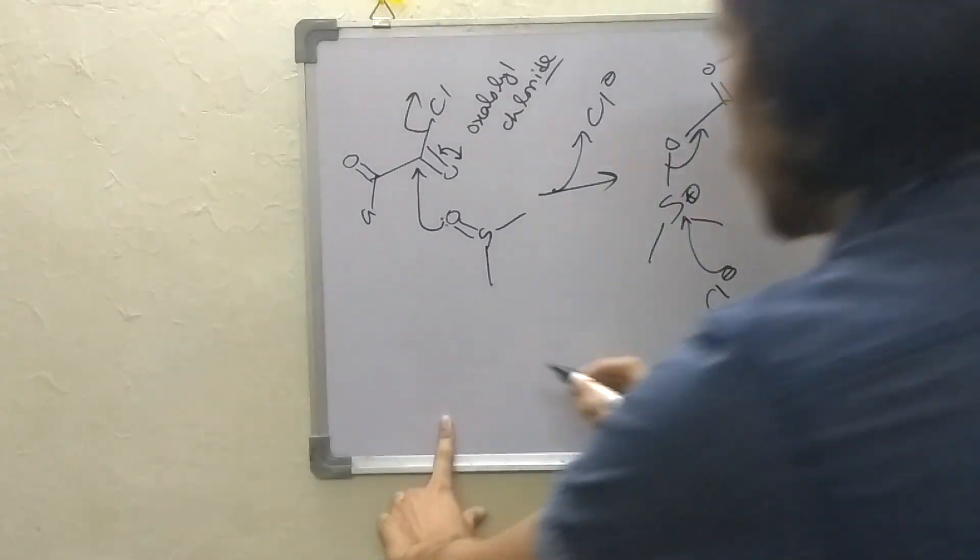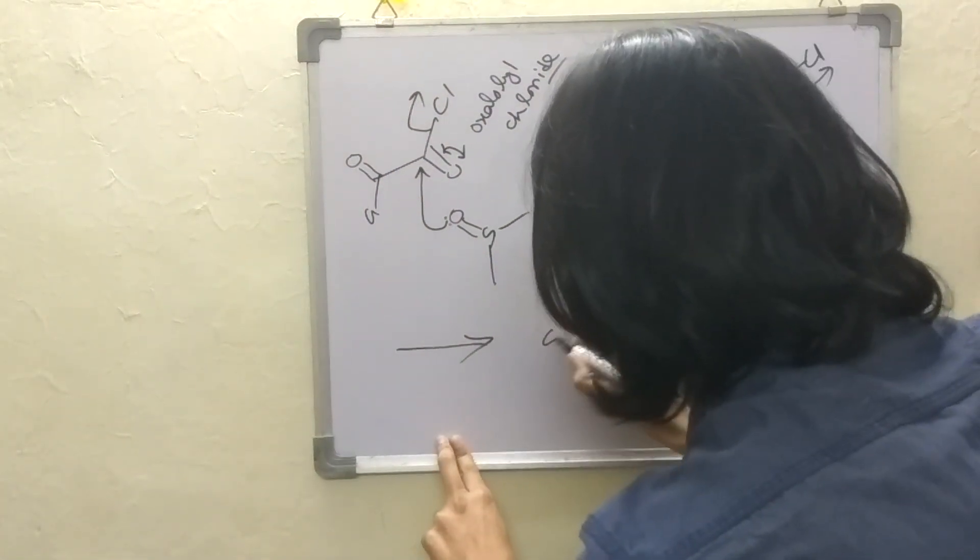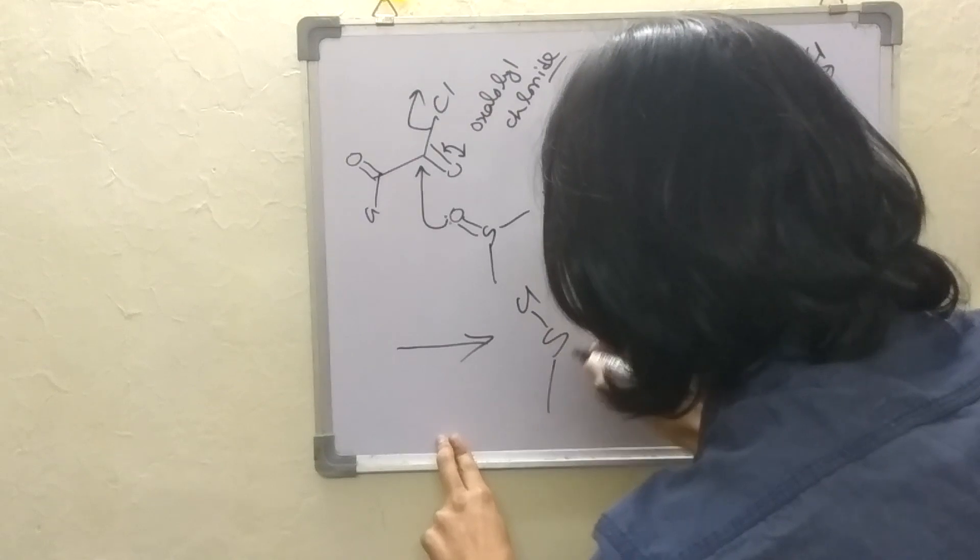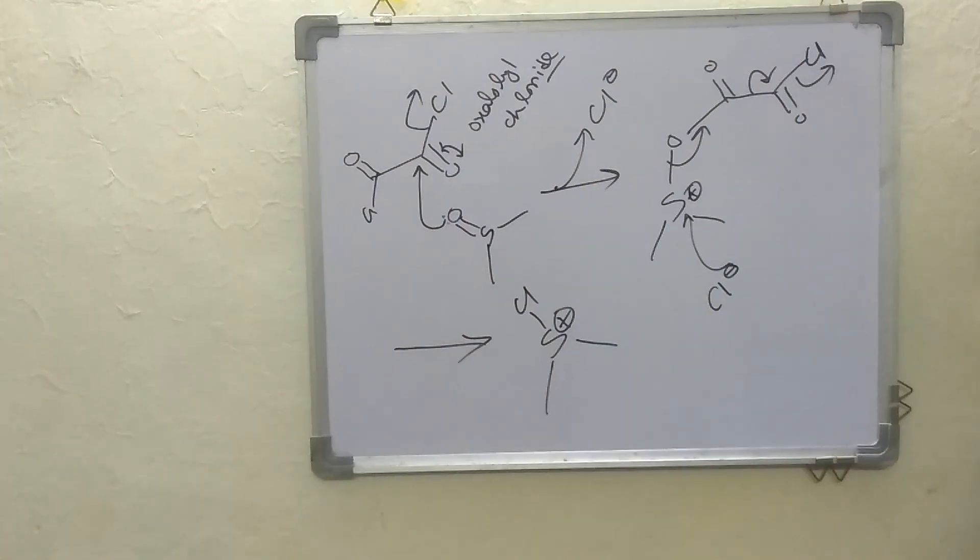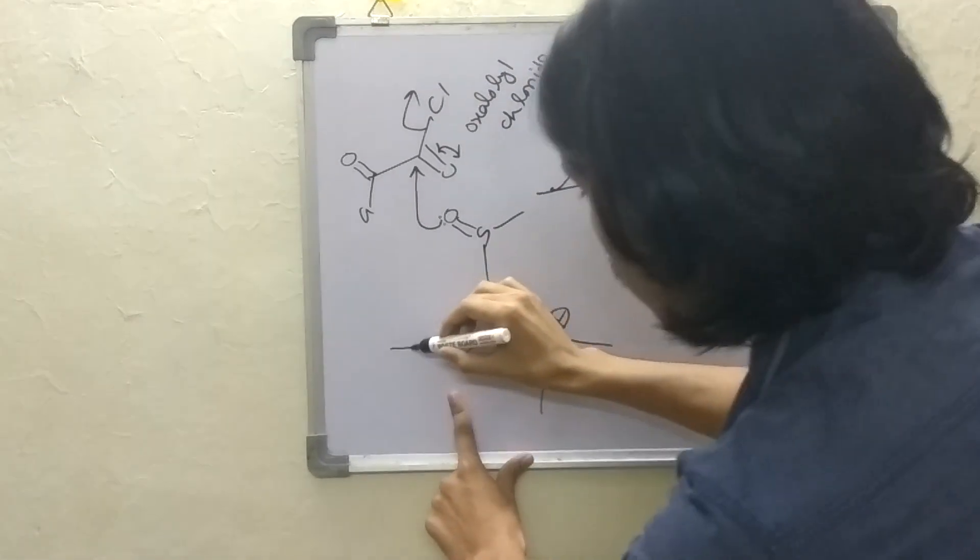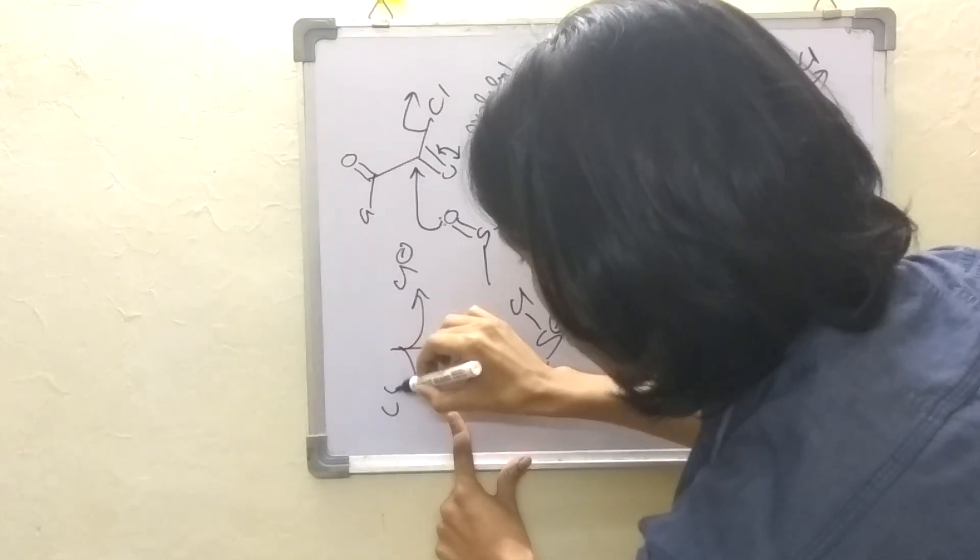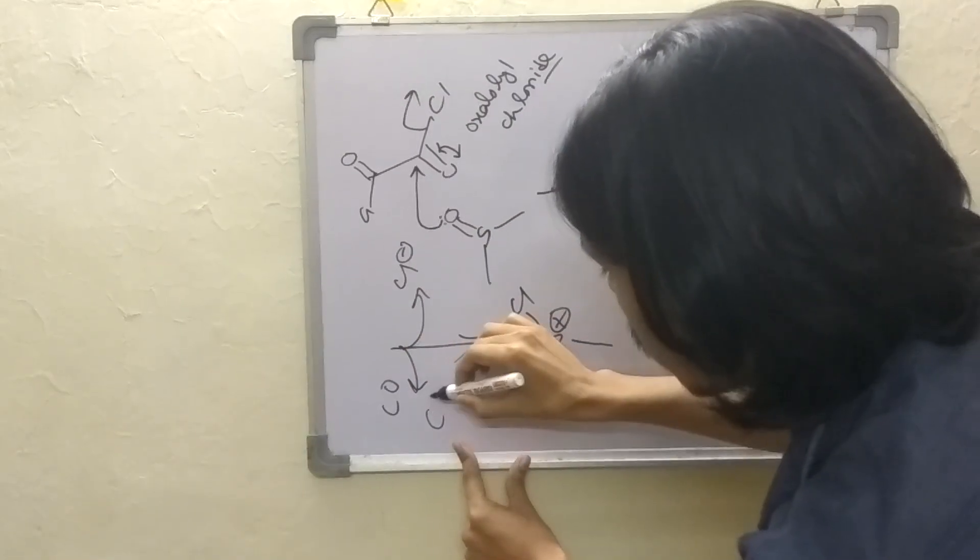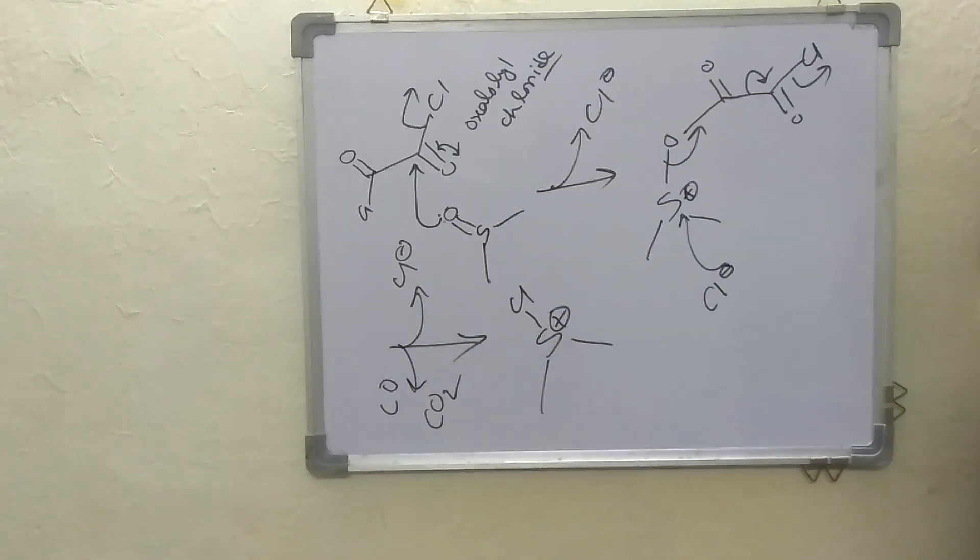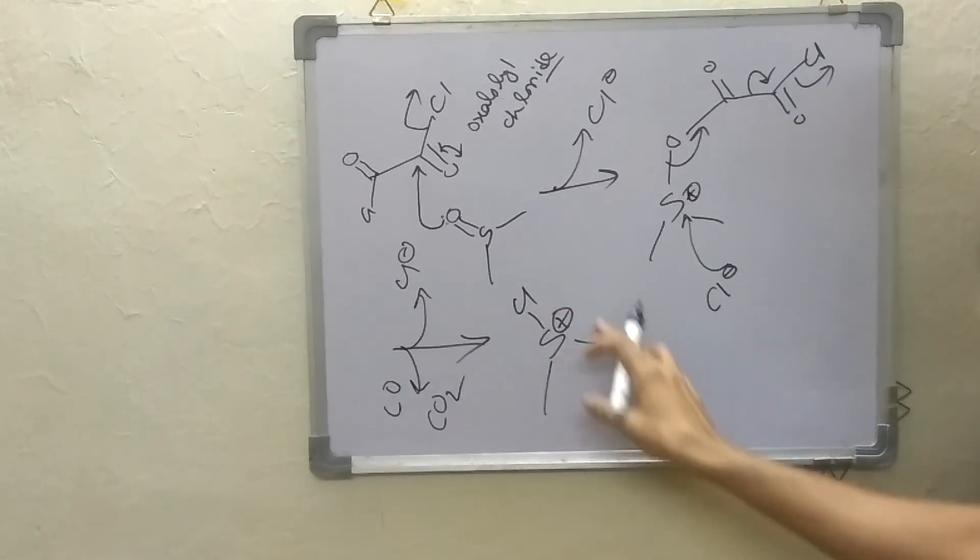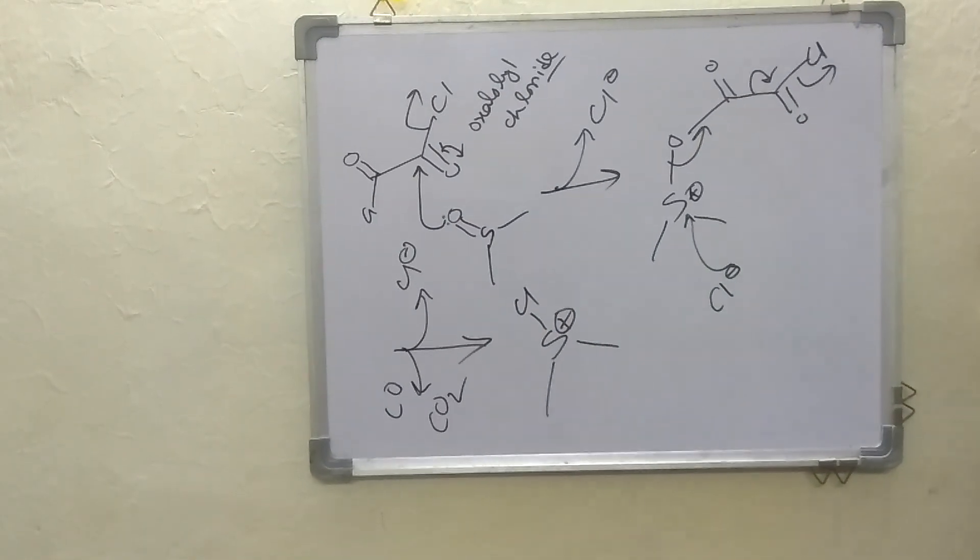So in this state what is happening is that this intermediate will be generated and here something is removing like Cl minus and carbon monoxide and also CO2. So we have CO2, CO and Cl minus - these are removing in this reaction. Now we have this species in our hand.